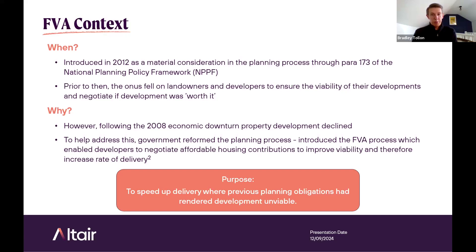FVAs were introduced originally in 2012 as a material consideration via paragraph 173 of the NPPF. Prior to that, it was the responsibility of developers to negotiate the correct land price with landowners to ensure development could be delivered within all of its planning obligations. However, following the 2008 economic downturn, development declined, so government reformed the planning process with the introduction of FVAs to enable developers to negotiate a reduced affordable housing contribution to increase viability and speed up delivery.